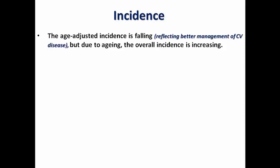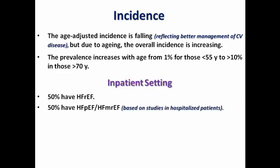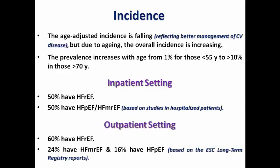Regarding incidence, the age-adjusted incidence of heart failure is falling due to better management of cardiovascular diseases in recent decades, but due to aging the overall incidence is increasing. Prevalence increases with age from 1% for those under 55 years to more than 10% in those over 70 years. In the inpatient setting, 50% have reduced ejection fraction and 50% have preserved or mildly reduced ejection fraction. In the outpatient setting, 60% have HFrEF, 24% have HFmrEF, and 16% have HFpEF.